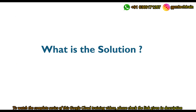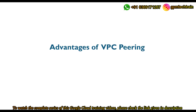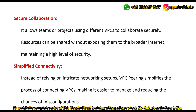The solution is VPC peering. VPC peering comes to the rescue by providing a straightforward and secure way to connect different VPCs, allowing them to communicate directly as if they are part of the same network. It essentially creates a direct and private connection between VPCs, overcoming the isolation and enabling seamless communication.